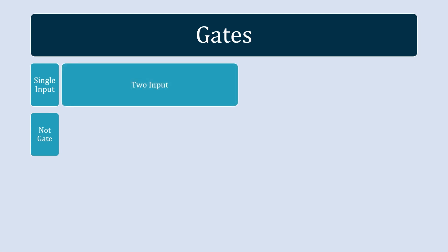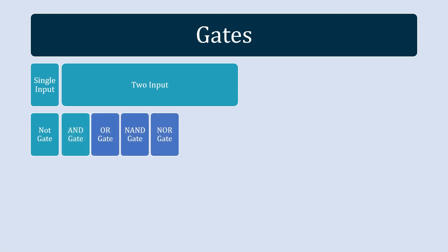Then there are 2-input logic gates: AND gate, OR gate, NAND gate, NOR gate, XOR gate, and XNOR gate. All these gates have 2 inputs on the left and 1 output on the right.